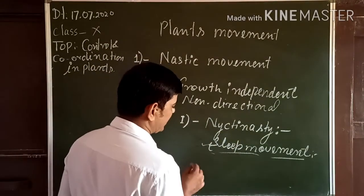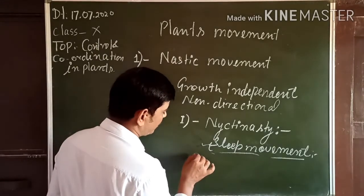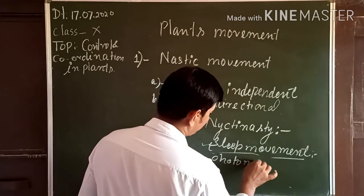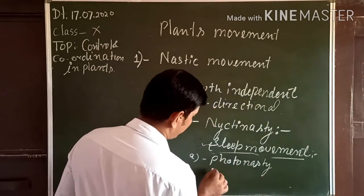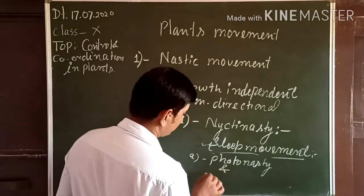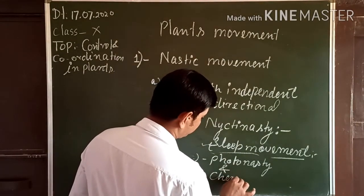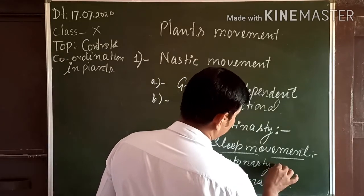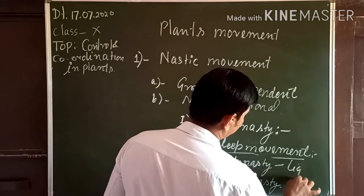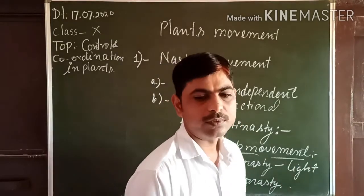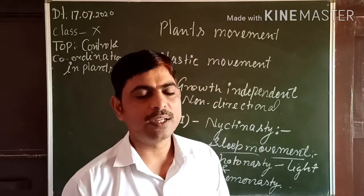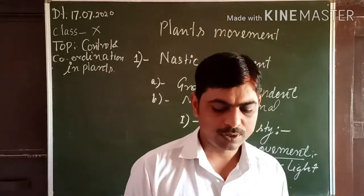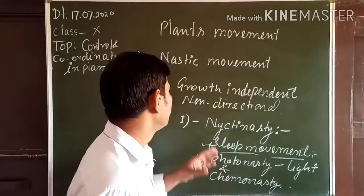Nyctinasty can also be Photo-nasty or Chemo-nasty. Photo-nasty is a response to light — for example, dandelion flowers bloom in the morning and close in the evening when sunlight disappears. Photo means light, so this type of movement is in response to light.